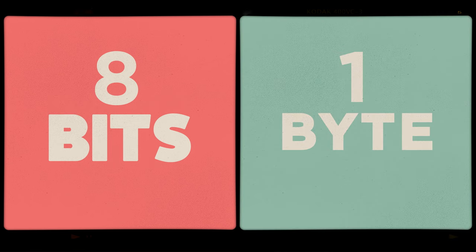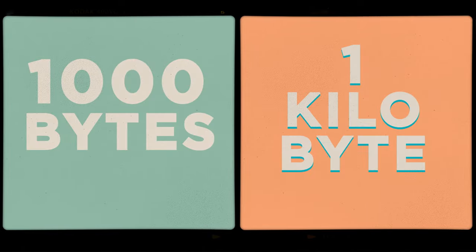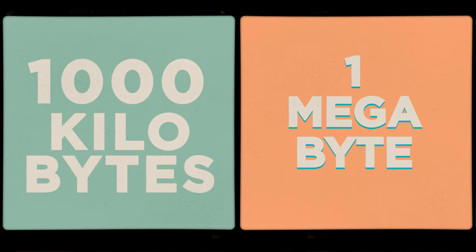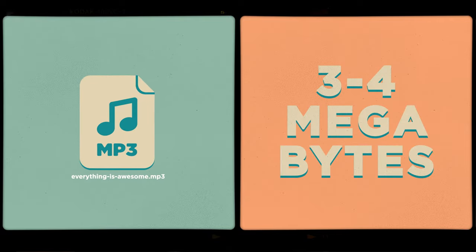Eight bits strung together makes one byte. One thousand bytes all together is a kilobyte. One thousand kilobytes is a megabyte. A song is typically encoded using about three to four megabytes. It doesn't matter if it's a picture, a video, or a song — everything on the internet is represented and sent around as bits.